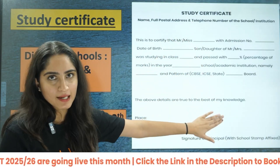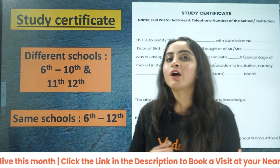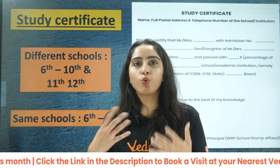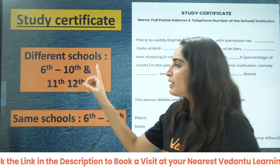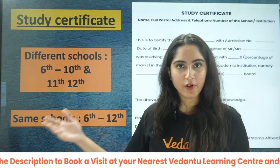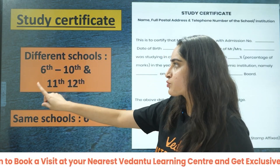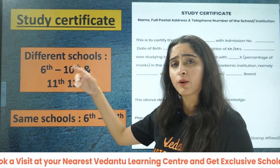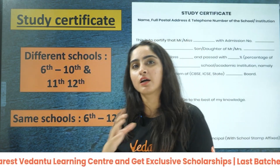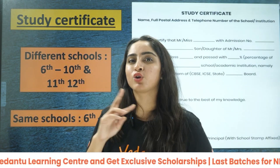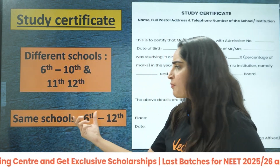It will look something like this. The main important thing is, if you have not done your schooling from just one school, you need to get the certificate from different schools. For example, if you have done classes 6 to 10 from one school and 11 to 12 from another school, you need the certificate from both of these schools.